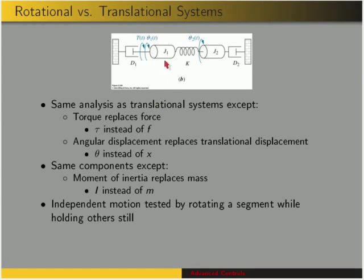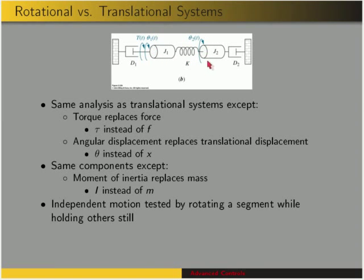This figure doesn't quite have the same notation that we're going to use. Just like in translational systems, we can have independent motions with rotational systems. We test that by rotating a segment while holding the other still. In this system, we can rotate this segment here while we hold this segment still, so theta 1 and theta 2 are independent motions.